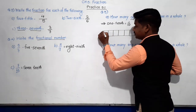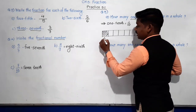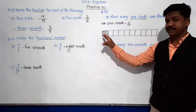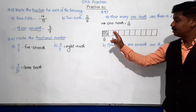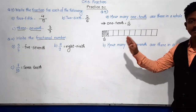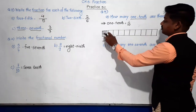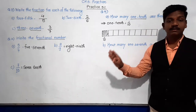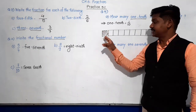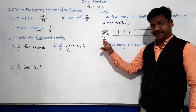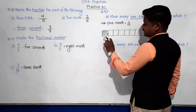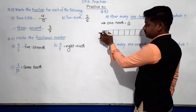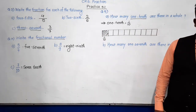If you take one part, what fraction can you write for this? One out of ten, or one upon ten — one by ten. This one part in the whole strip: one part is one upon ten. Why one upon ten? Because the whole strip, or whole chocolate if you consider that, is divided into ten equal parts. Out of ten equal parts, one is shaded — that means it indicates one upon ten. The number below the bar represents total equal parts and the number above the bar represents the shaded part. So this one shaded part represents one upon ten, that is one-tenth.